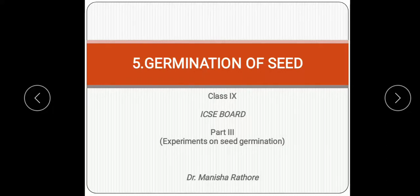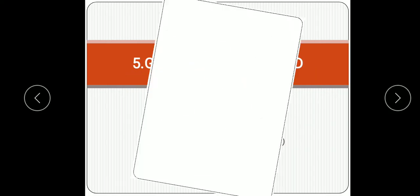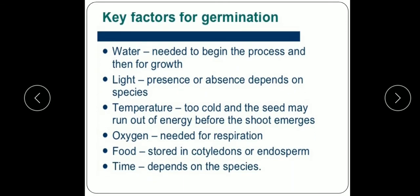Students, today we will complete this portion on experiments on seed germination. Some part I have explained in the morning, so I am repeating this part again to understand it in a better way. You have studied in the first two parts what germination is and the types of seeds — monocot and dicot seed.